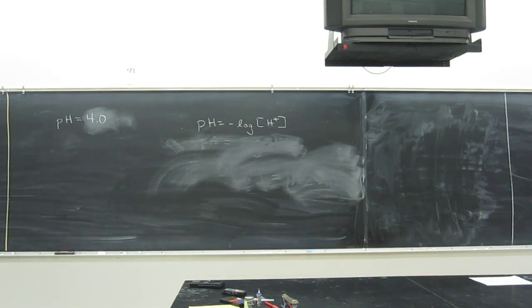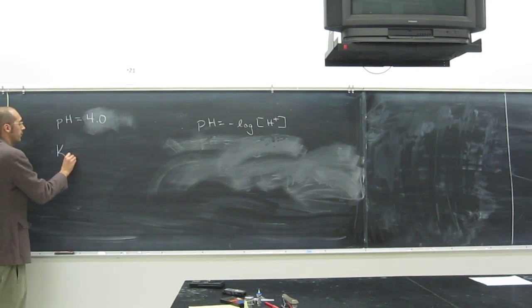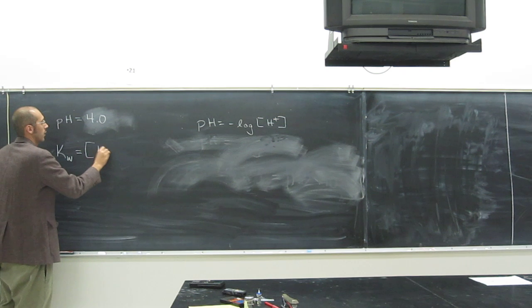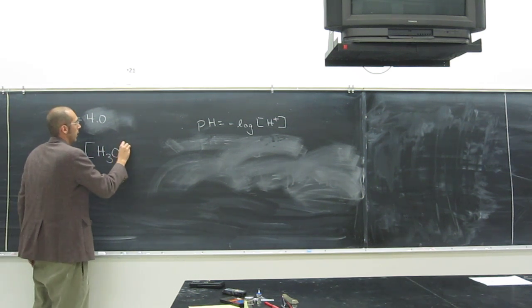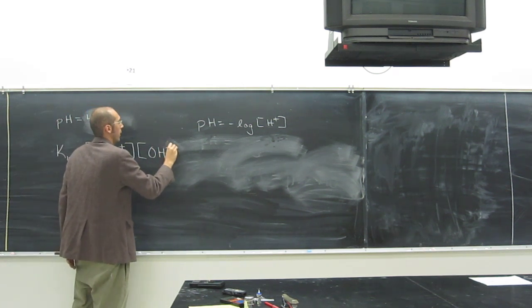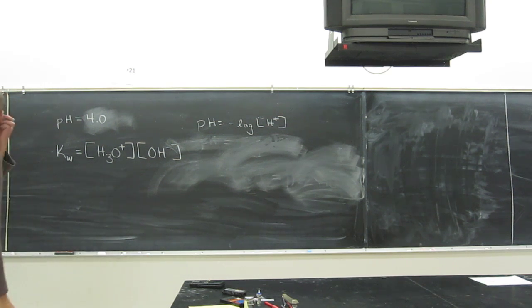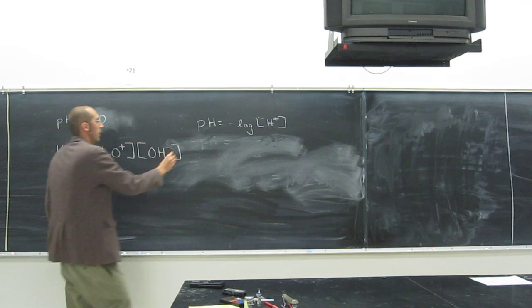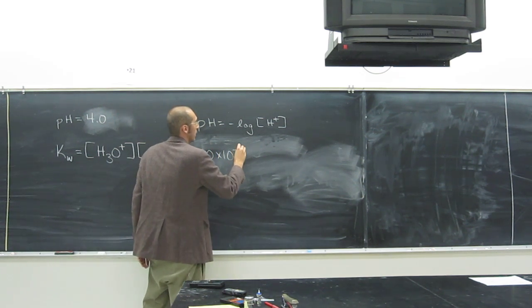So there is something else we know, though. We know Kw. Kw is the concentration of H+ or H3O+ times the concentration of OH-. And we also know that Kw is a value of 1.0 times 10 to the negative 14.